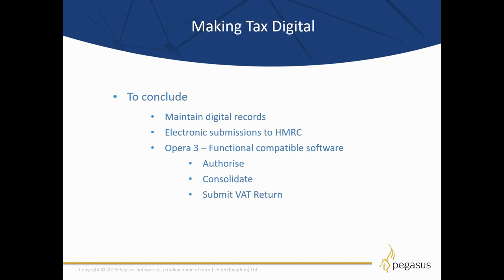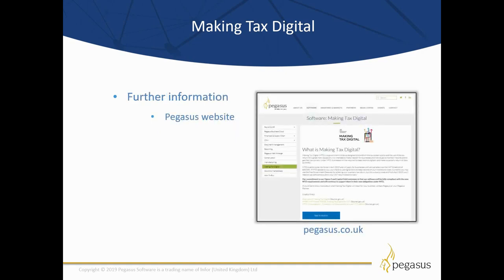As we've just seen, Opera 3 covers all the requirements for functionally compatible software as defined by HMRC. It allows you to authorize your copy of Opera 3 to communicate with your VAT account held on the HMRC site, consolidate VAT returns across multiple companies, and submit that VAT return to HMRC using the MTD VAT API. Using the Advanced MTD version, it will also allow you to use Opera 3 as bridging software to submit VAT returns from third-party software products through to HMRC. For further information, go to the Pegasus website — pegasus.co.uk — on the Software tab, where there is a Making Tax Digital option. From there you will find an introductory video giving a concise overview of what Making Tax Digital is all about, along with an overview of MTD linking to the government website with detailed coverage and short video overviews on a range of different aspects of MTD.